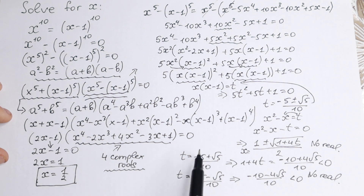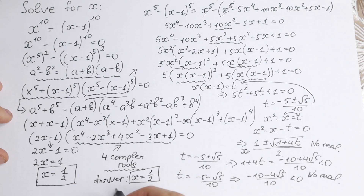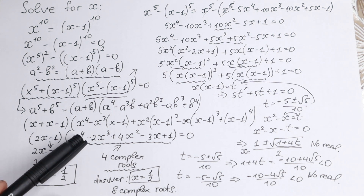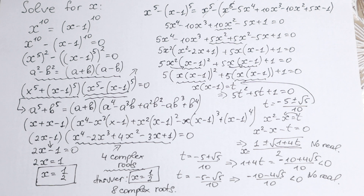So the right factor gives us no real roots. The final answer in real numbers is x equals one half. The equation has 8 complex roots in addition. This was a bit complicated since it's not a simple quadratic or quartic, and solving everything fully would take 20 to 30 minutes. I hope you understand this explanation — if not, write a question in the comments. Thank you so much for watching and subscribing. See you in the next video. Have a great day!